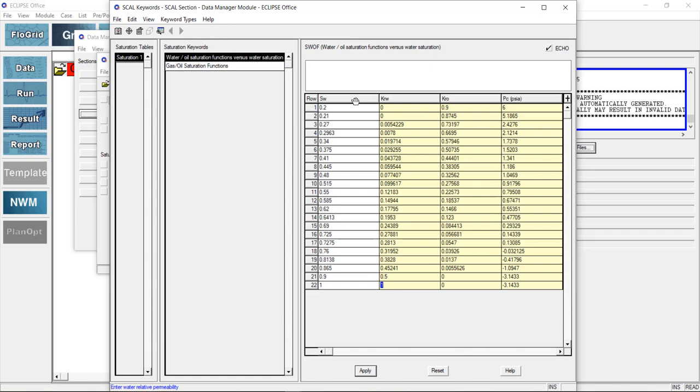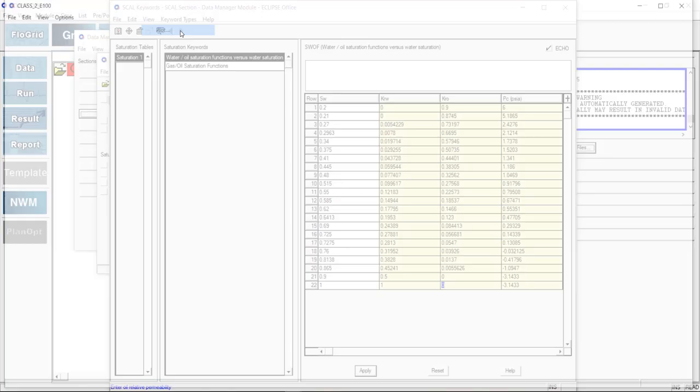So as water saturation increases, technically, oil saturation is supposed to reduce so that both of them can add up to one at every point. And then a reduction in oil saturation is going to result into a reduction in the mobility of oil. Alright, you can also view this information on a chart by displaying the relative permeability curves from here.